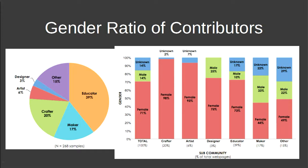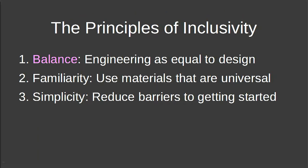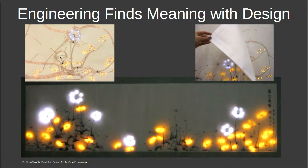Now we want to move beyond simple circuits and get into coding. For the last year I've been working on a project called Love to Code, figuring out how to make coding more inclusive through paper electronics. We settled on principles: emphasize balance between engineering and design, use familiar materials, and keep things extremely simple. Engineering finds meaning with design — on the left you have the circuit, on the right artwork, and together you get a beautiful interactive painting.